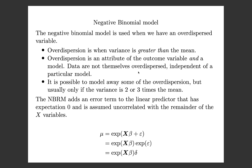The negative binomial model is used when we have an over-dispersed variable. Over-dispersion is when the variance is greater than the mean, and it is an attribute of an outcome variable within a particular model — data are not inherently over-dispersed. Some models of the same variable might exhibit over-dispersion while others don't. The conventional wisdom is that it's possible to model away over-dispersion, but usually only if the variance is two or three times bigger than the mean; if it's more than that, even a good model is unlikely to resolve it.